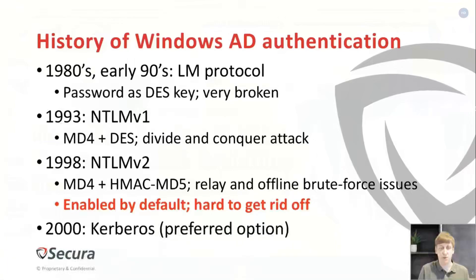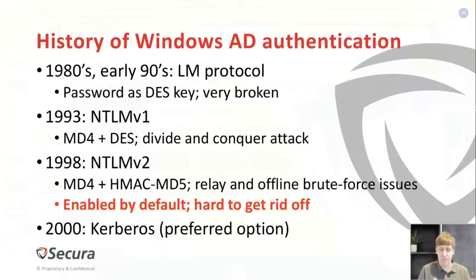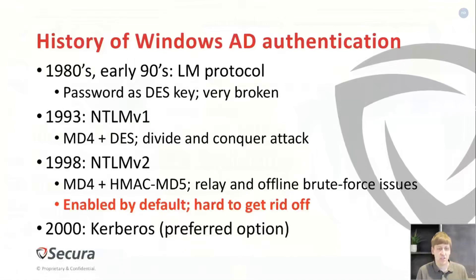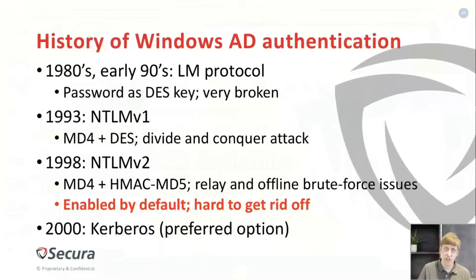In 1993, this protocol was replaced in Windows by NTLMv1. This combines a hash function — MD4 — and separate parts of this password hash were encrypted, which was then used to authenticate to systems. It was also quite broken, because you could still break individual DES keys and subvert the authentication system. So this system was updated in 1998 by NTLMv2, with some cryptographic updates. It still has a number of issues: relay attacks, offline brute force attack issues. So it was replaced as well by Kerberos.